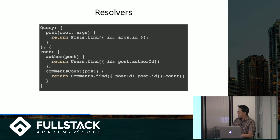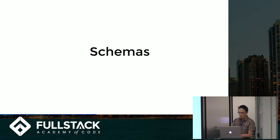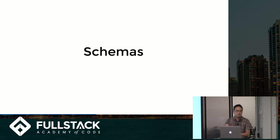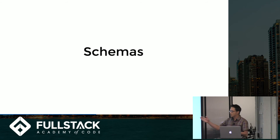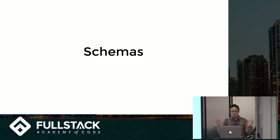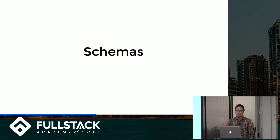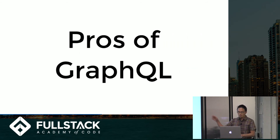The third component of GraphQL, besides queries and resolvers, is schemas. Schemas are kind of complex, and a full explanation is too long for this talk. The big takeaway is that there are three parts: queries, resolvers, and schemas. You can read more about schemas in the resources at the end.